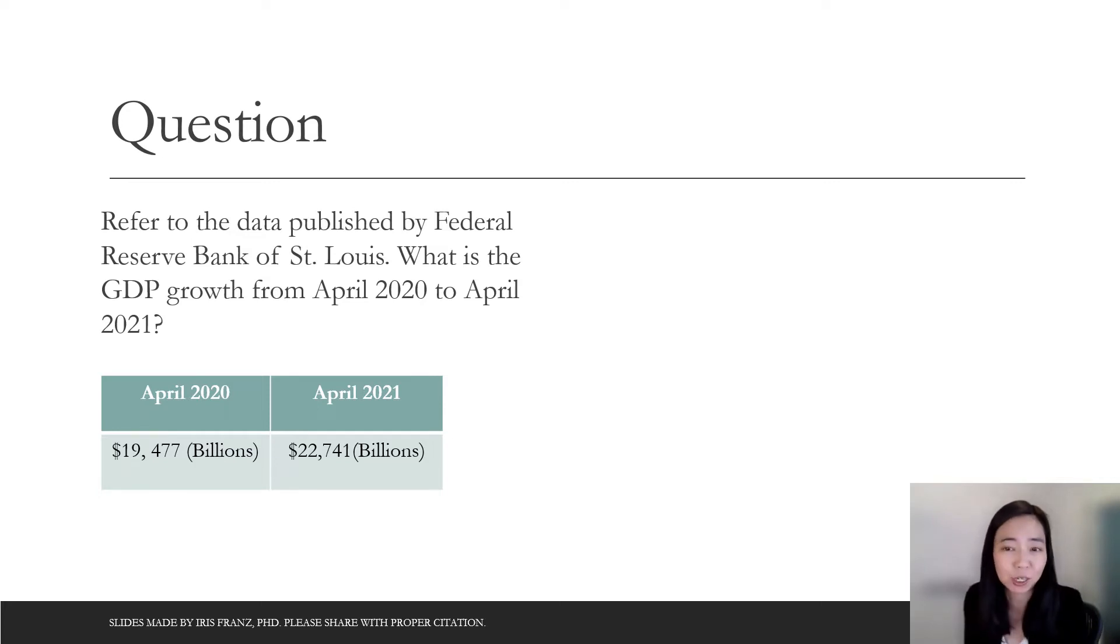Now, if you remember, April 2020 was the beginning of a lockdown. So we were in a recession. So you can see that April 2021, the GDP was a lot higher than in April 2020. So if you calculate the GDP growth rate, what is that? Now you can pause the video and then calculate, then you can compare the answer with me.